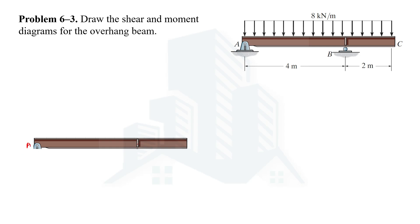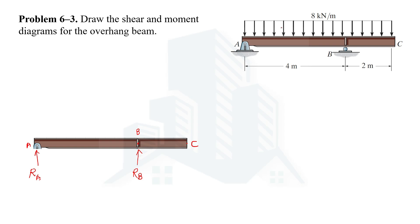Let's consider the free body diagram of the beam. Point A, point B, and point C are identified on the beam. At point A we have a hinge support, which gives two reactions — one vertical and one horizontal. However, since there is no horizontal force acting on this beam, there will be no horizontal reaction. So we have a vertical reaction RA. At point B there is a roller support, giving only a vertical reaction RB.